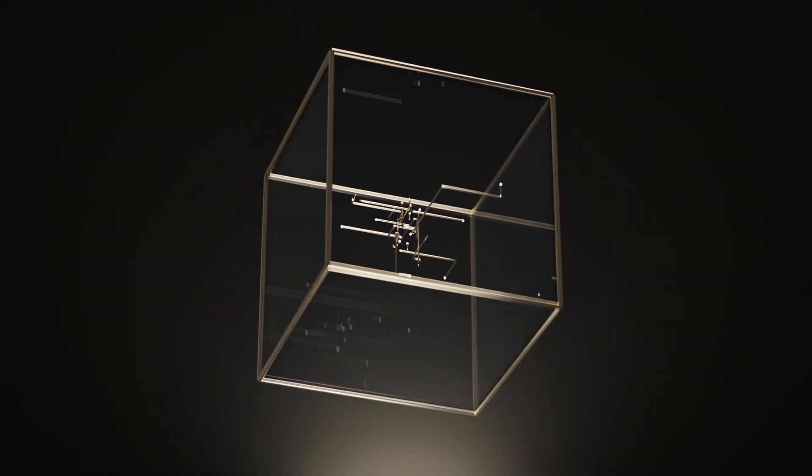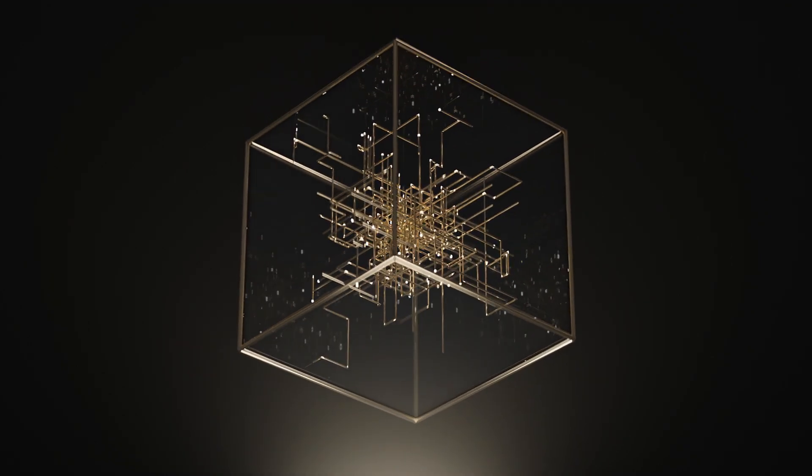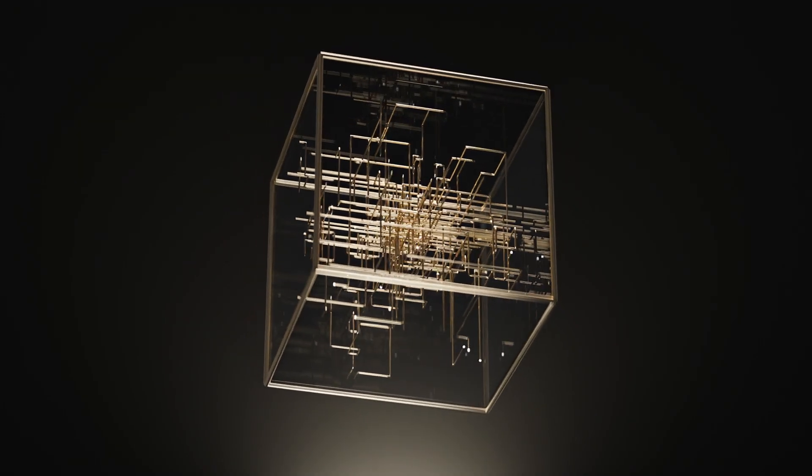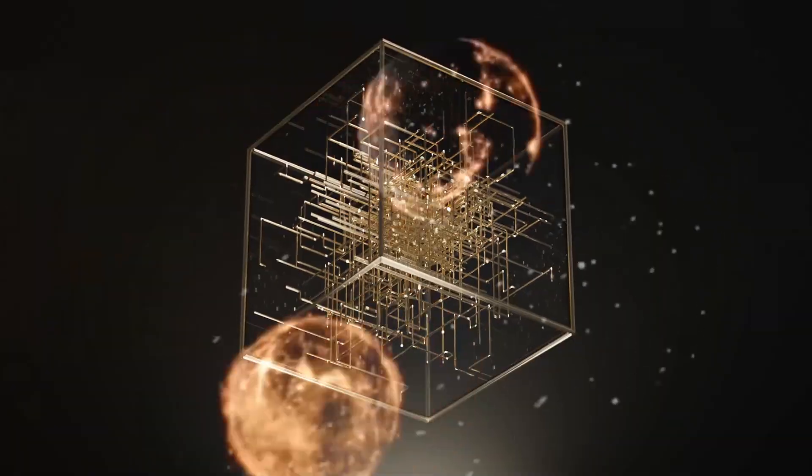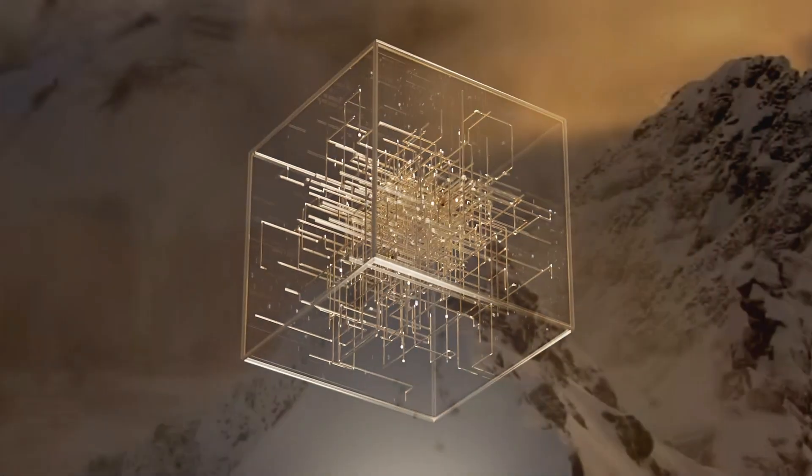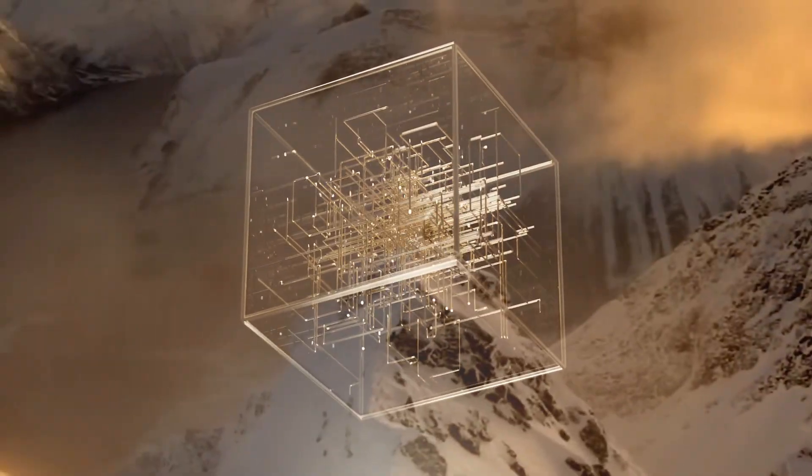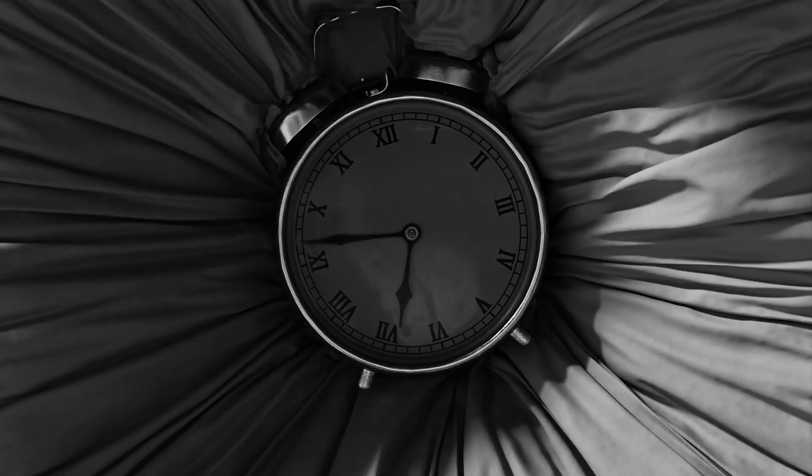This idea is known as the block universe, or eternalism. We can visualize it like a colossal four-dimensional block encompassing all of history. If we stack all those film frames from the universe's moments, we'd get a gigantic block of space and time. In this block universe model, every event, the extinction of the dinosaurs, the release of the first iPhone, the day you graduated, all exist equally somewhere in the block. There's no special, moving present that travels through the frames. Instead, time doesn't flow at all. All moments just are, spread out in the continuum of space-time.